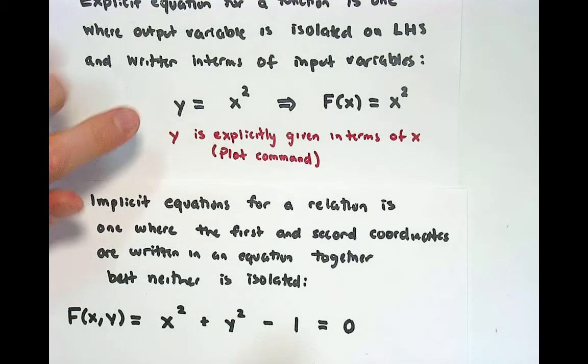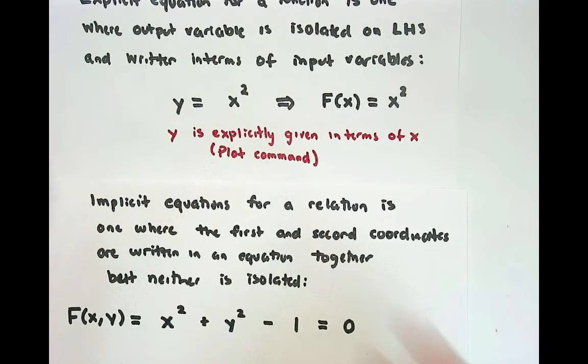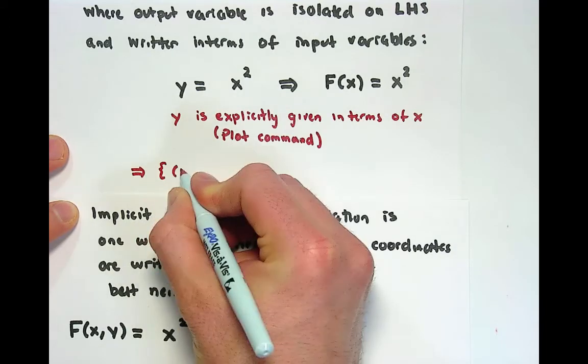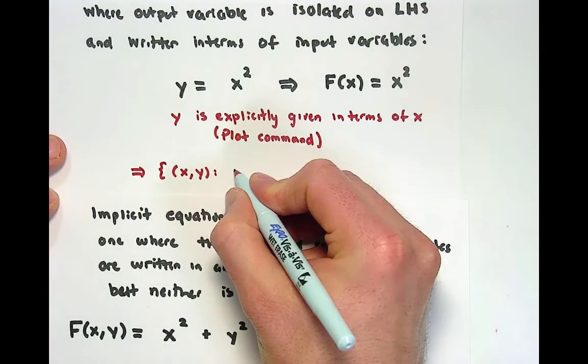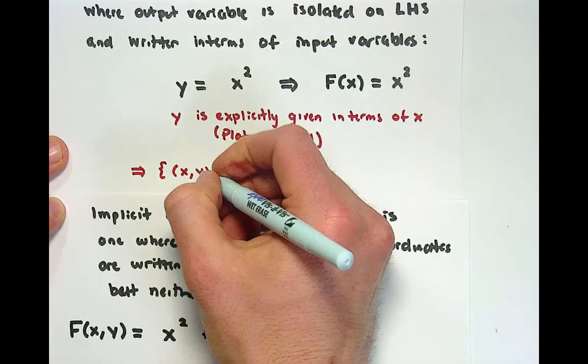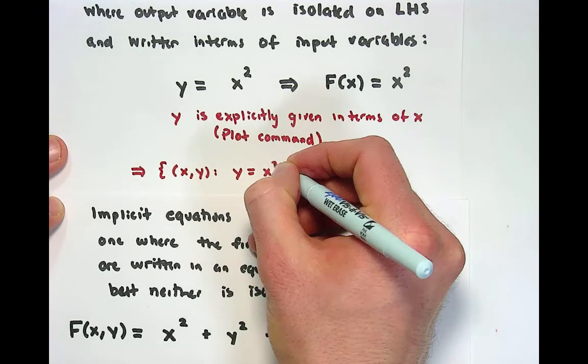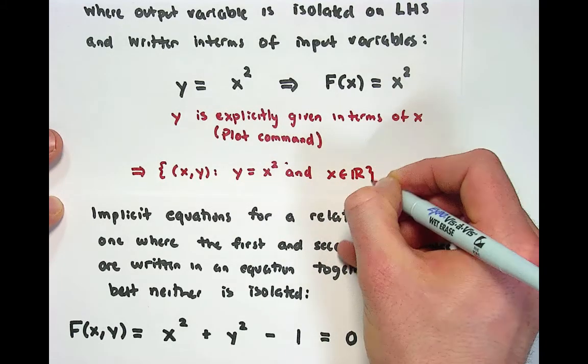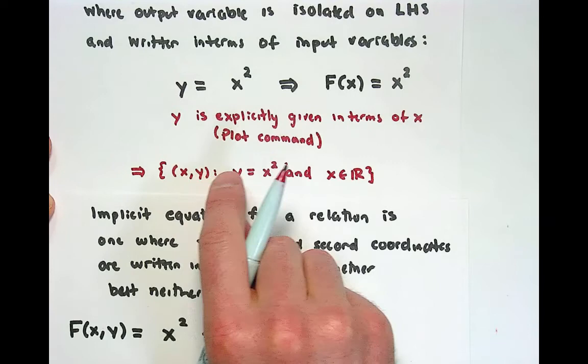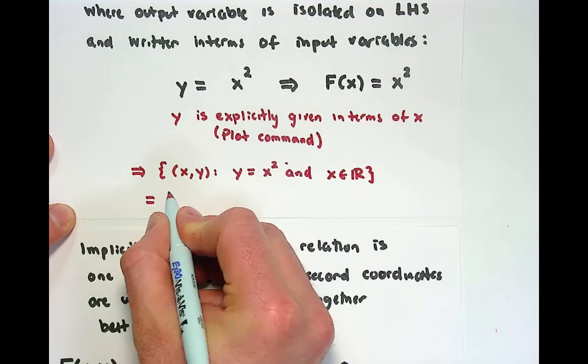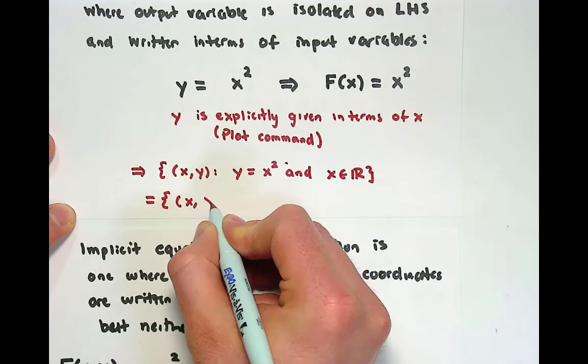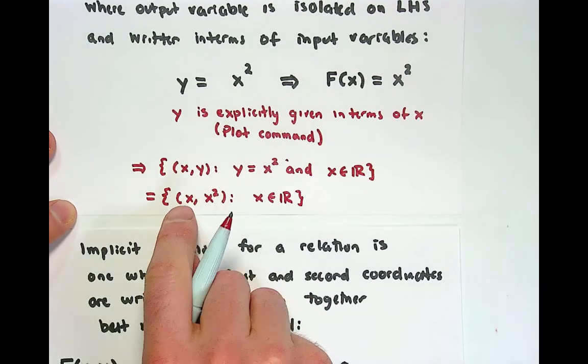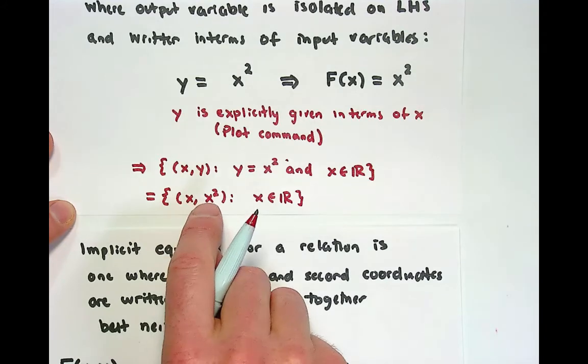If you compare the explicit representation of your output variable in terms of your input variable, really in the background all of this has to do with ordered pairs. Here you're looking at the set of ordered pairs x comma y such that the output variable, the second coordinate, is written as the square of the input variable. So the output is explicitly given in terms of the input. And what's really interesting about this is when you have an explicit representation, this now becomes a situation where both the first and second coordinates are written in the same variable.